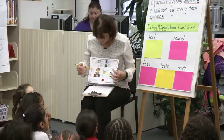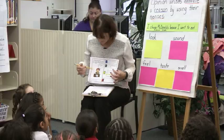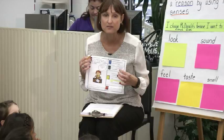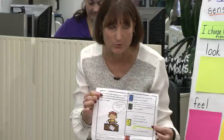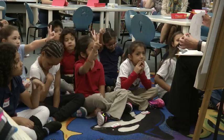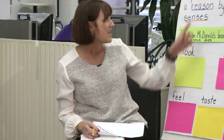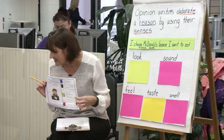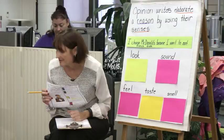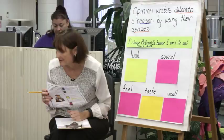Today we're still working towards this goal. We're going to be working right here where it says two. By the end of today, we're all going to at least be a two. I'm going to teach you how opinion writers elaborate a reason by using their senses. There's our dot right there that says that. So when we're all done today, I'm going to ask you: can you elaborate a reason using your senses? That's the work we're going to be doing together today.